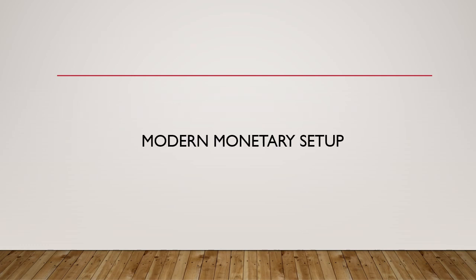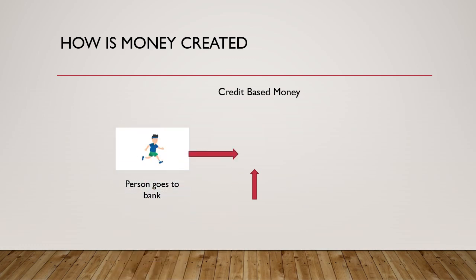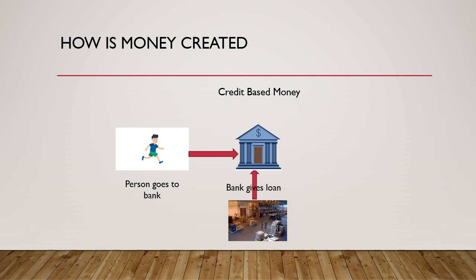Before we start, we'll have a brief context of the modern monetary setup — how money is created and grows in the economy. A person goes to the bank to get a loan. The bank takes from the person a collateral, which can be an asset or inventory, and in lieu of that the bank grants him a loan. And voila — money is created in the economy, because as the name suggests, in this system credit is money.